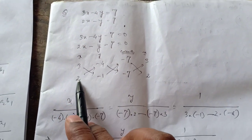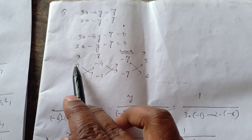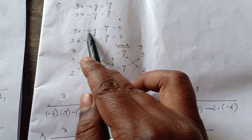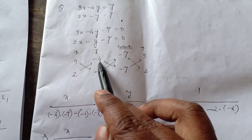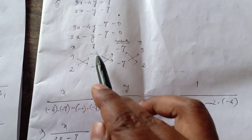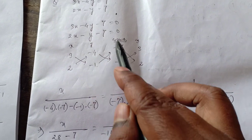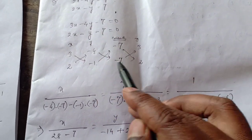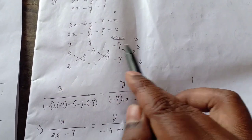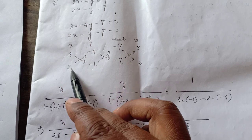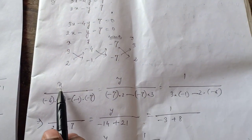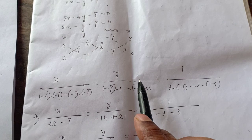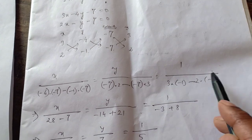Then write the coefficients of X — 3 and 2 — one below the other. Coefficients of Y: minus 4 and minus 1. Constants: minus 7 and minus 7. Then repeat the coefficients of X: 3 and 2. Then write X by, Y by, and 1 by, with equals signs in between.